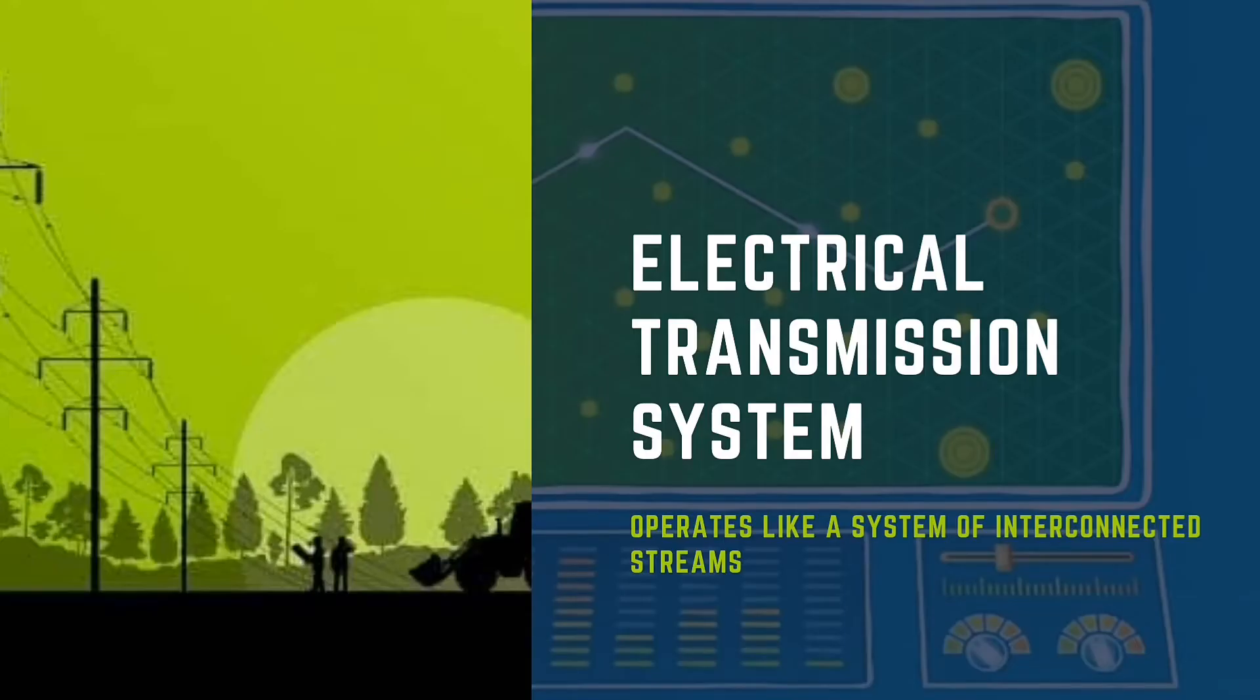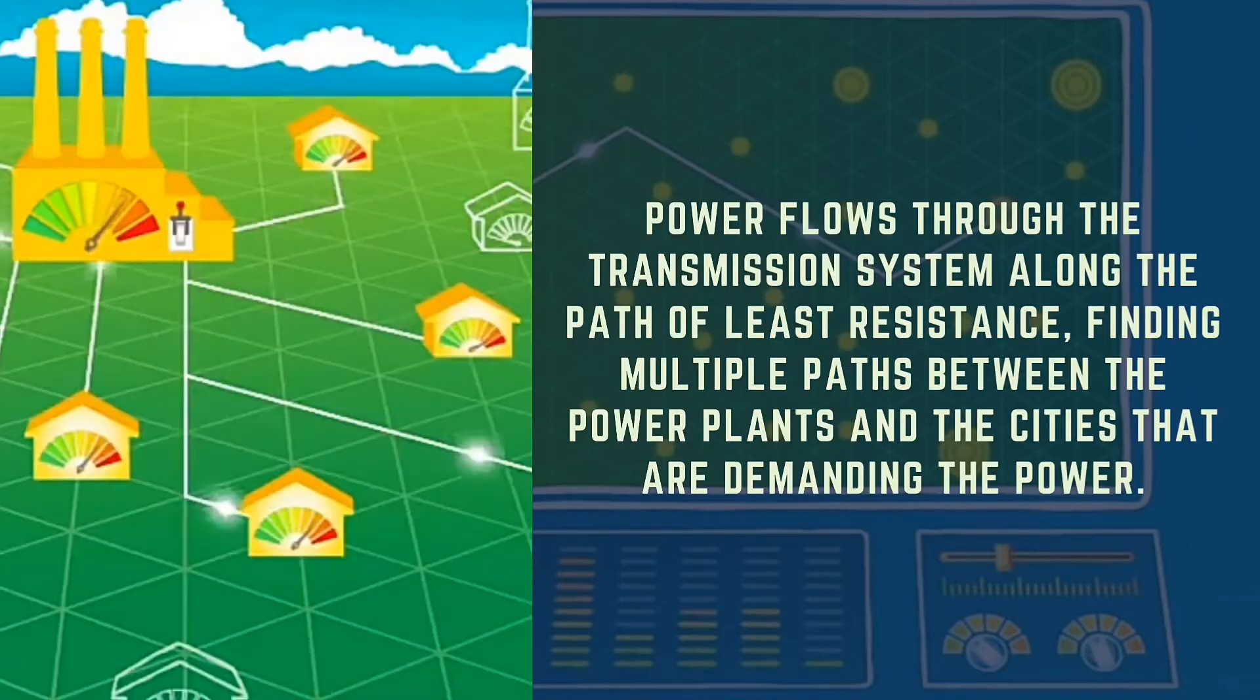Today's electrical transmission system, which includes those giant power lines and transmission towers that can usually be seen in an expressway, operates like a system of interconnected streams. Power flows through the transmission system along the path of least resistance, finding multiple paths between the power plants and the cities that are demanding the power.